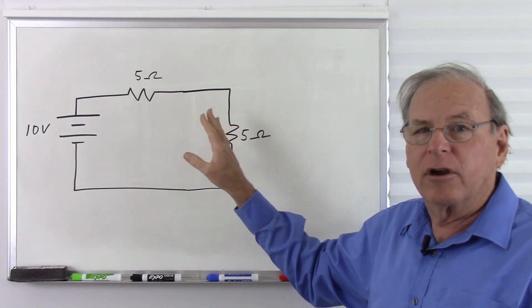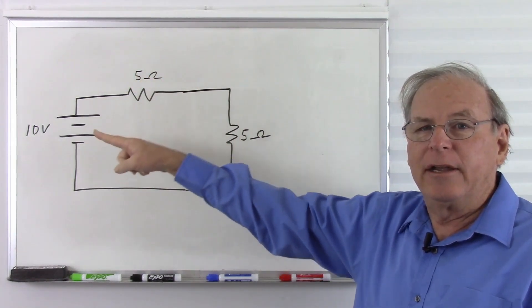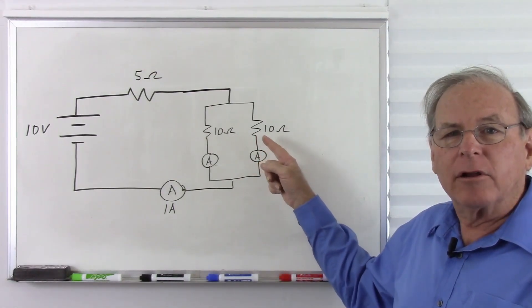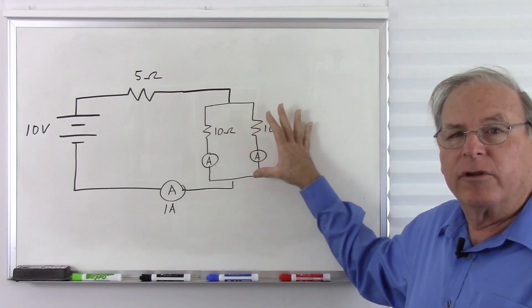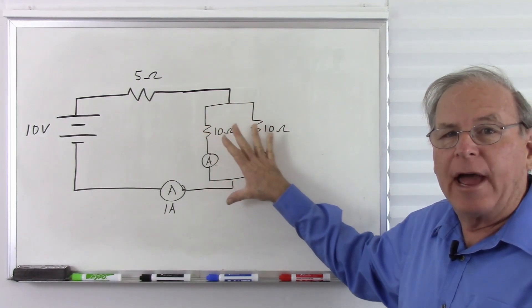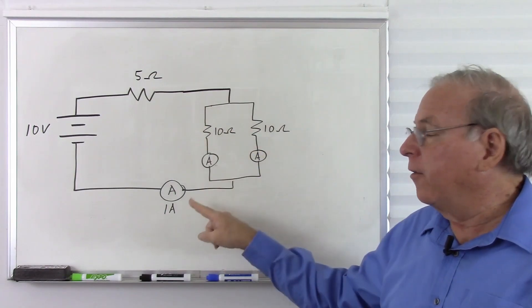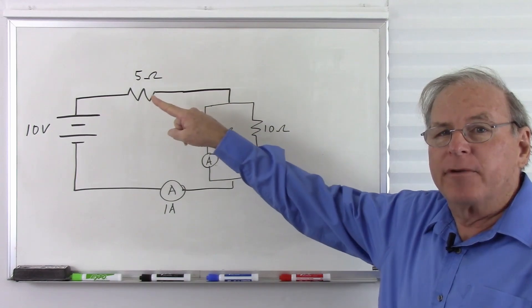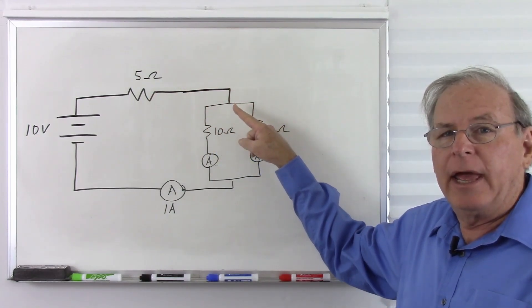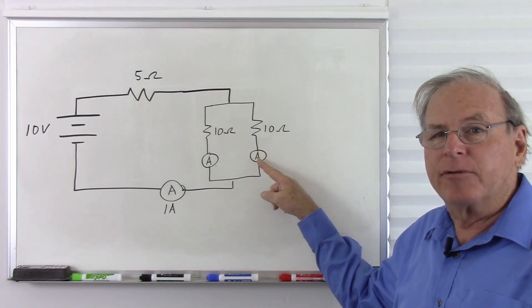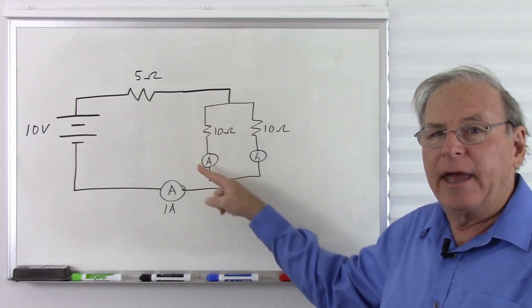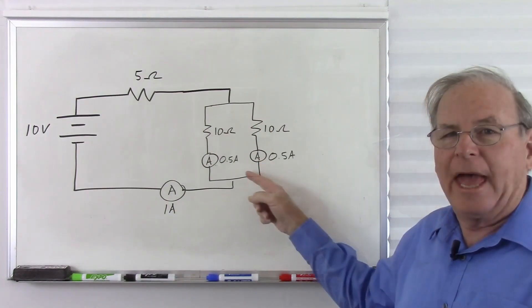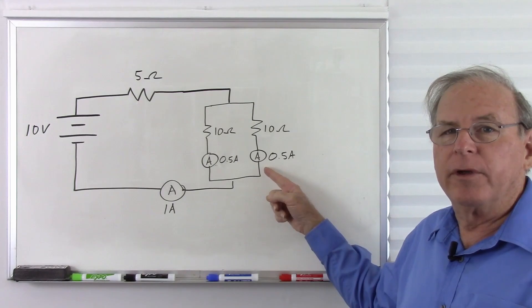With 10 ohms and 10 volts, we will have 1 amp of current. Zooming back out a little, we can see the two individual resistors acting in parallel, and we now know there is 1 amp of current. That 1 amp is going to come through and split up, so half an amp goes one way and half an amp goes the other way. Each leg of the circuit has 0.5 amps flowing through it.